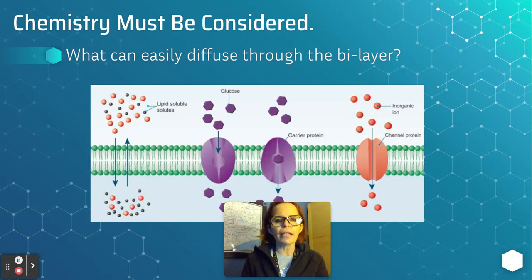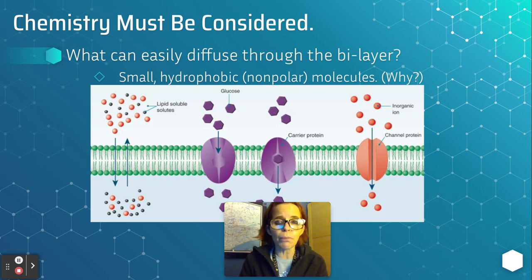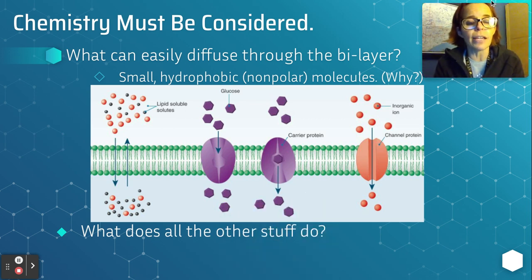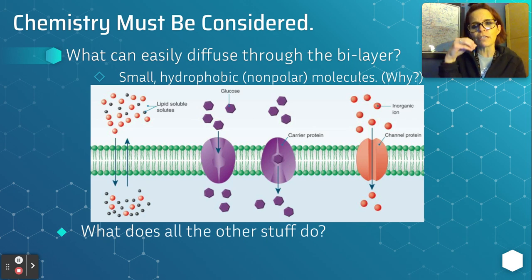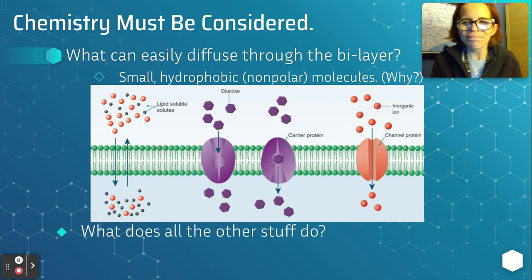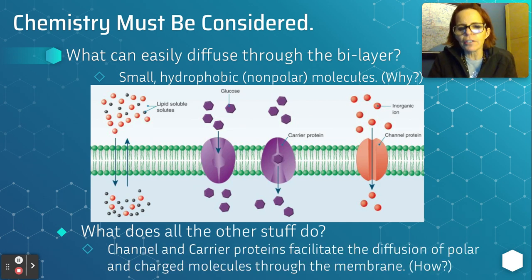When talking about chemistry, we're talking about whether something is ionic or polar — that's super important. What can easily diffuse through the lipid bilayer? Something that's small and hydrophobic or non-polar, because they are not repelled by the polar heads of the lipid bilayer. The phospholipids have a polar head and a non-polar tail. What's it called when a molecule has a polar and a non-polar area? Right — amphipathic. Channel and carrier proteins facilitate the diffusion of polar and charged molecules through the membrane.